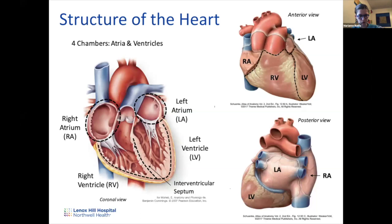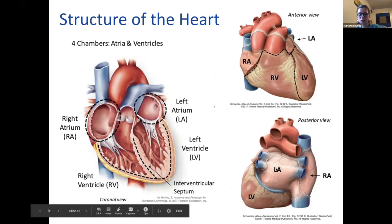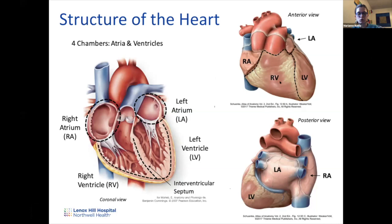Here you can see the anterior and posterior views of the heart. Anteriorly you can see the right ventricle, left ventricle, and right atrium. The left atrium is not visible from the anterior view because it is positioned posteriorly. In the posterior view, you can see the left atrium. So the most anterior structure is the right ventricle, and the most posterior is the left atrium.